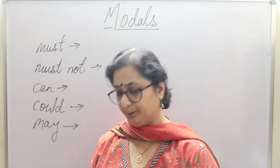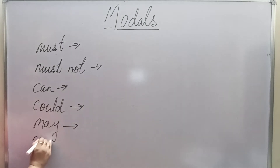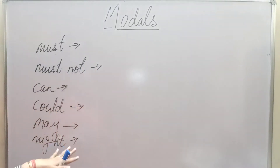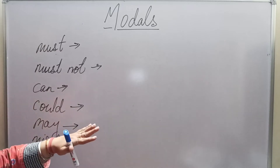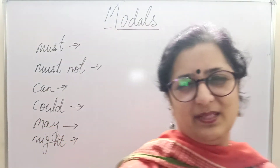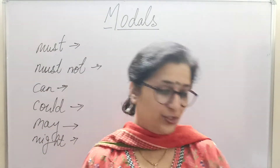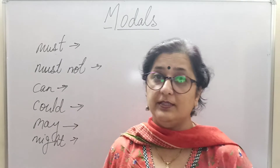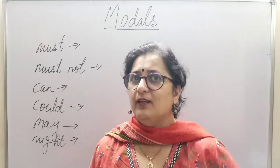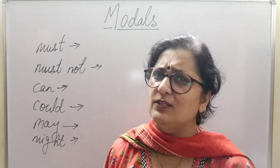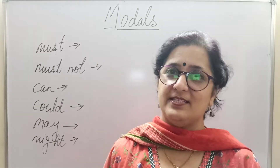A similar one is 'might.' We use 'might' similarly to 'may.' Might is used in an even more polite form than may. 'May' is for seeking permission whereas 'might' is even more polite permission: 'Might I do this for you?' It is also used for probability: 'I might go on a holiday next weekend.' There are chances the person may go, and at the same time there are chances the person might not go. So 'might' is again used to express probability.